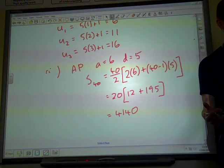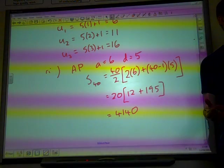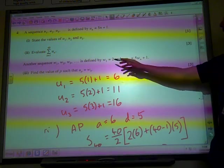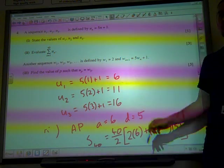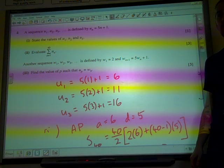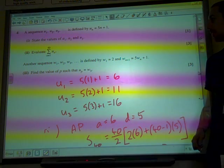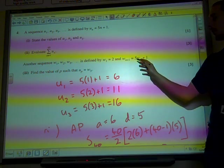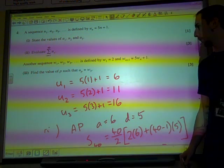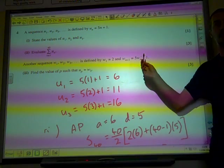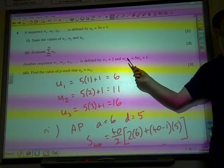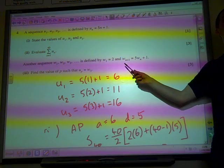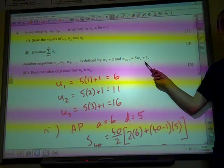Part 3. And now this gets a bit interesting. We're told in part 3 that there is another sequence, W1, W2, W3, defined by W1 is 2, and WN plus 1 is 5WN plus 1. This is what we call a recurrence relation. This is where every new term we get by doing something to the current term.